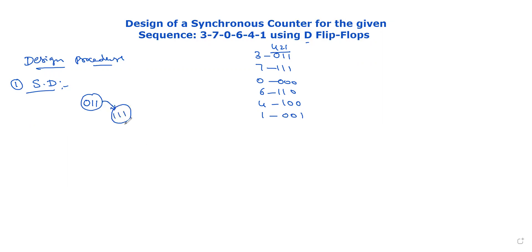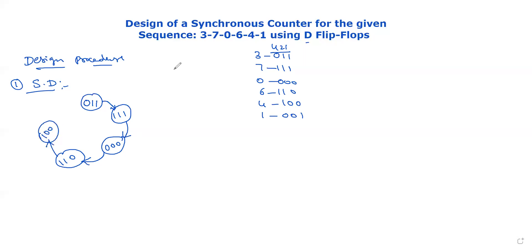The sequence transitions are as follows: 3 goes to 7. Next, 7 goes to 0. Then 0 goes to 6 (which is 1-1-0). Next, 6 goes to 4. 4 (which is 1-0-0) goes to 1 (which is 0-0-1). Then 1 goes back to 3, repeating the sequence. This is the state diagram.